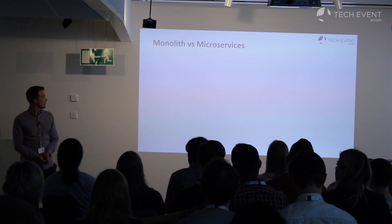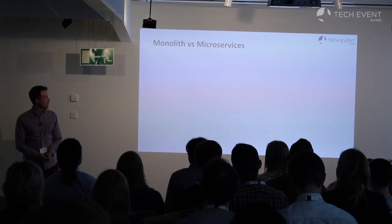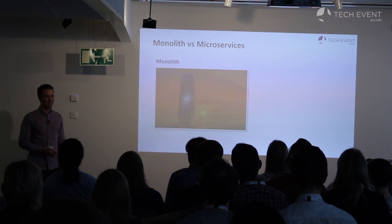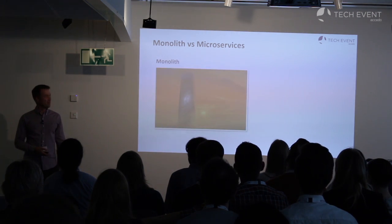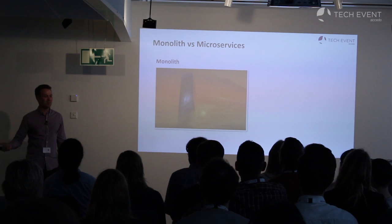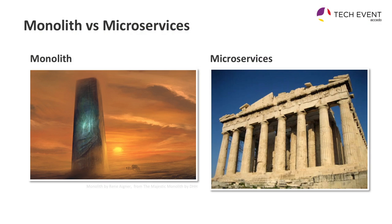Just quickly first describing what the monolith is and what a microservice is. A monolith basically has all your code in one repository and you produce one executable binary and that's what you run. For a microservice, you split different services into separate repositories and code packages, and you compile different pieces and put them together to build your application.